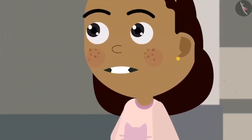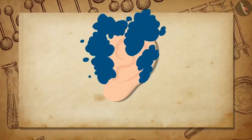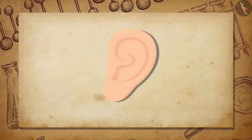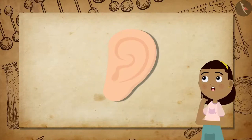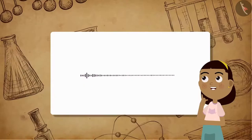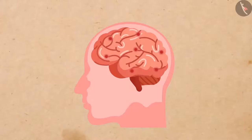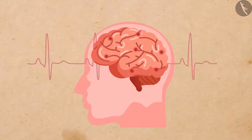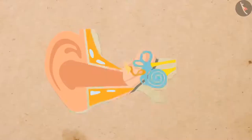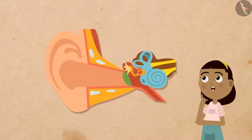Humans hear sound with the help of an extremely sensitive device: the ear. The human ear allows us to convert pressure variations with audible frequencies into electrical signals. These signals travel to the brain through the auditory nerve.